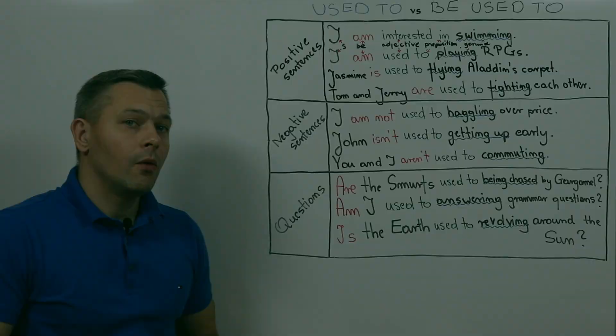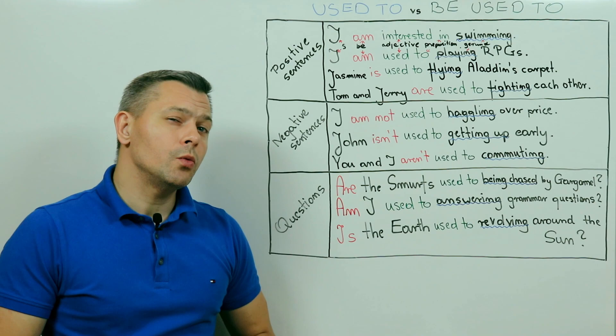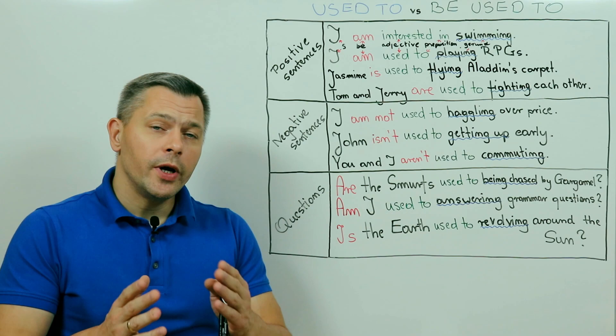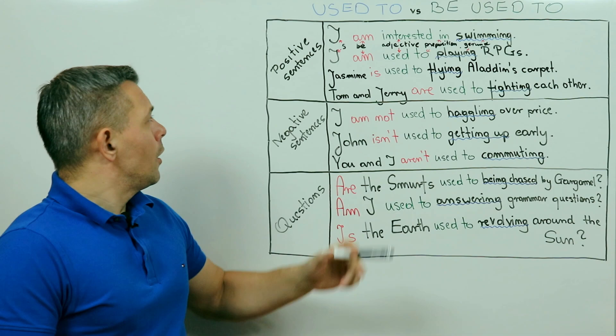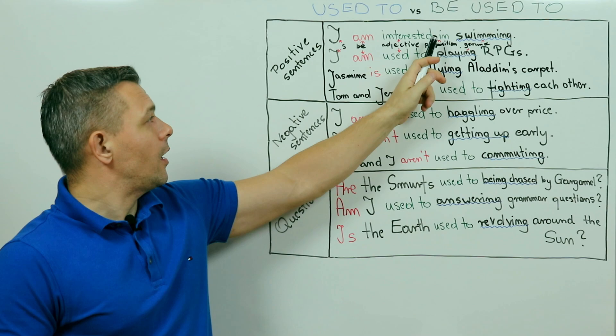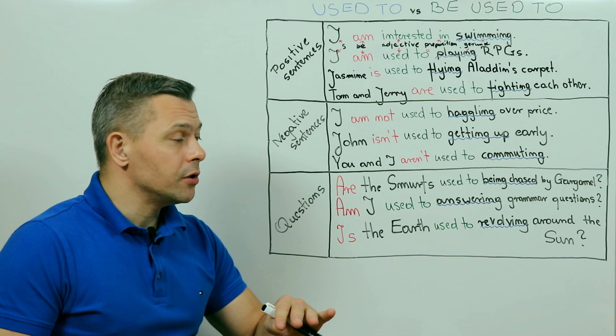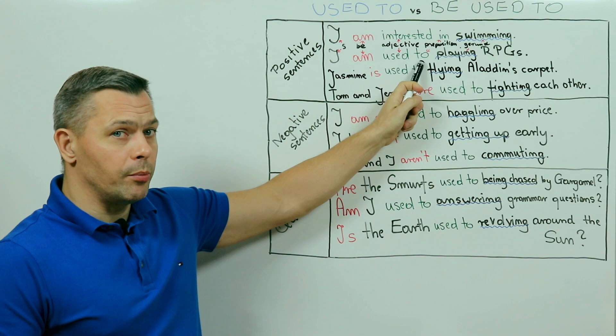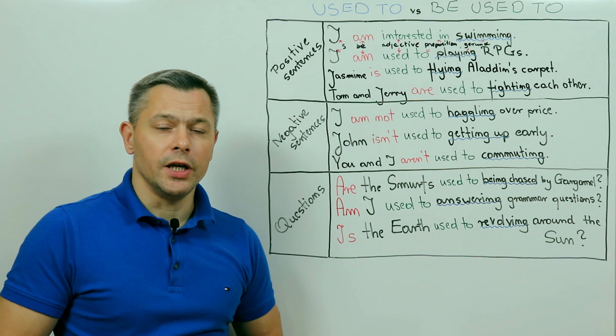Well, it is because the second structure we are discussing today is be used to. And although we see and hear used to again, it is an entirely different one. To help you understand the be used to structure, we will use a very simple present simple sentence, namely, I am interested in swimming. First, we have the subject, then be, then an adjective, then a preposition, and then a gerund, so a verb with ing, which functions as a noun. So unlike in the first structure we are discussing today, here used is an adjective, not a verb, to as a preposition, and then we have a gerund, not an infinitive. And these are the structural differences between the two heroes of today's video.